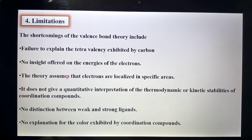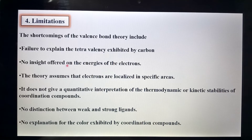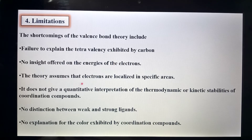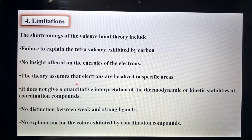The second drawback is that no insight is offered into the energies of electrons. Electrons reside in specific orbitals — lower energy electrons in lower orbitals, higher energy electrons in higher orbitals — but the energy differences between electrons are not explained by valence bond theory. The third drawback is that the theory assumes electrons are localized in specific areas.